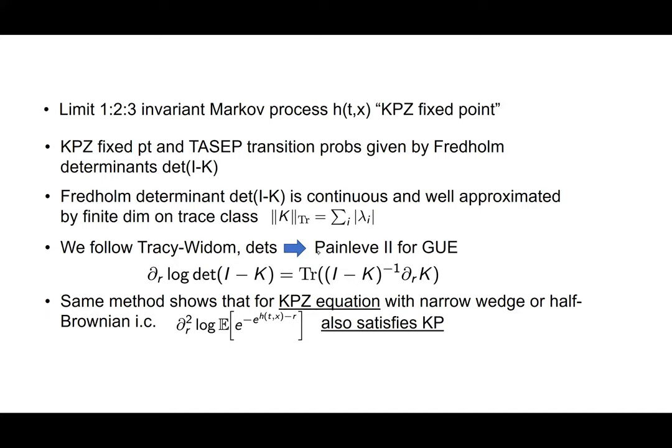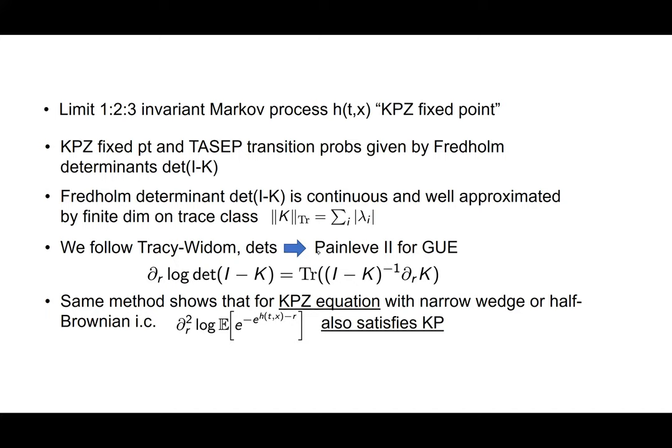There's actually a Markov process in the limit, H(T, X), rather than just the limit of the 1-2-3 rescaled TASEP. It's a special 1-2-3 invariant Markov process called the KPZ fixed point. The KPZ fixed point and TASEP are special Markov processes whose transition probabilities are given by Fredholm determinants, which I'll explain now. If you're wary of Fredholm determinants, all you need to know is that they are continuous functions of K and well approximated by finite dimensional versions — classical determinants of a matrix — as long as K is a compact operator with finite trace norm.